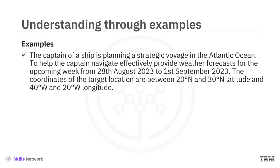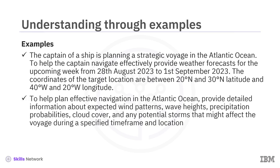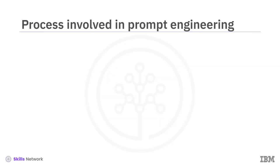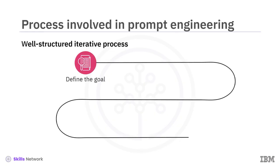The captain must also indicate whether he requires specific output — for example, should the model return information on other weather elements that could affect the voyage. For example: 'To help plan an effective navigation in the Atlantic Ocean, provide detailed information about expected wind patterns, wave heights, precipitation probabilities, cloud cover, and any potential storms that might affect the voyage during a specified timeframe and location.' It's important to recognize that prompt engineering is a well-structured iterative process that involves refining prompts and experimenting with various factors that could influence the output from the model.